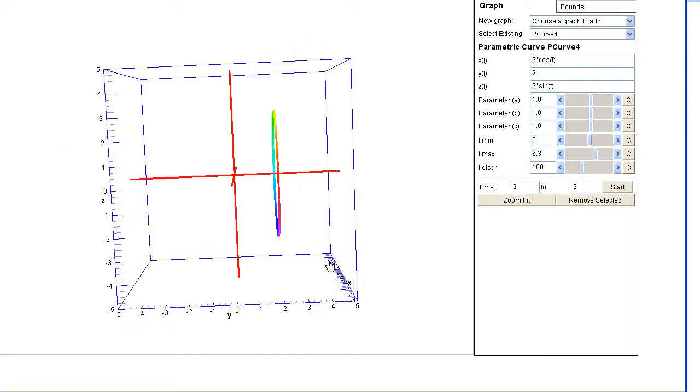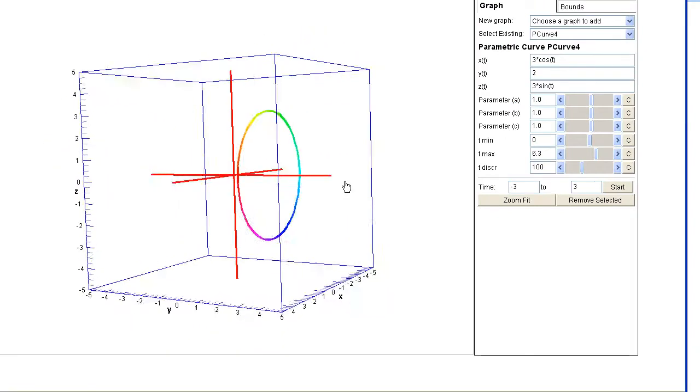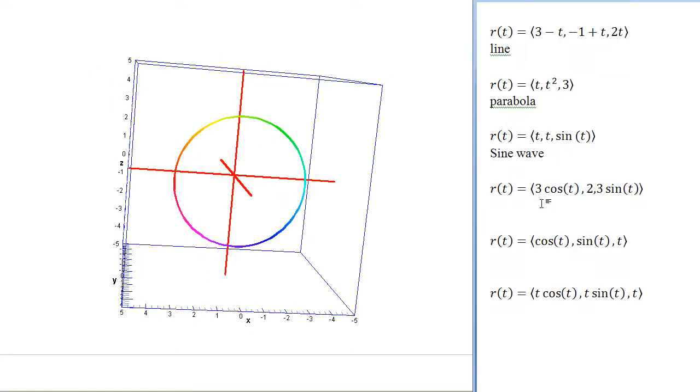So if we turn this thing sideways, we can see that y is always equal to 2. And so this one is just a circle out in space at a y value of 2.